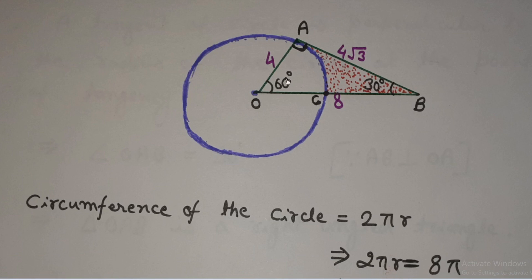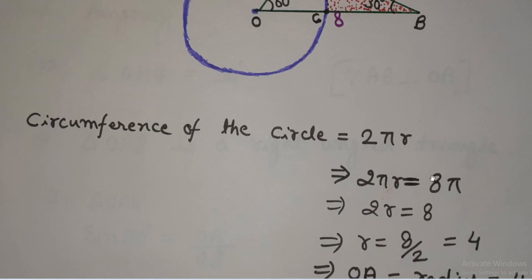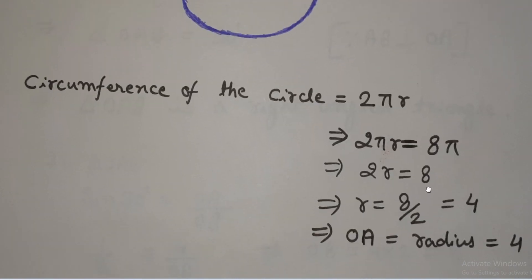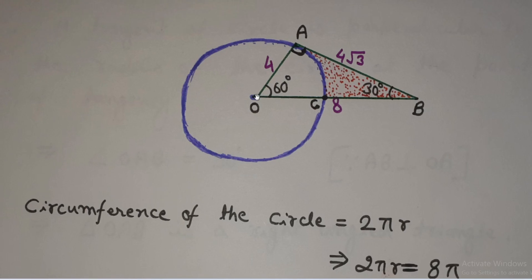We have shown the figure with dots instead of the complete red color shaded region. The circumference of the circle is given by the formula 2πr, and this is given to us as equal to 8π. So π cancels out and we get 2r equals 8, and r equals 4. We got the radius r. Radius r is OA actually, so one side of this triangle OA equals 4. Now one angle of this triangle is 30 degrees and one side we have is 4 units.